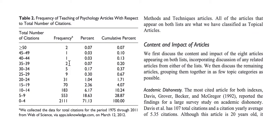Now, what happens if you're asked about a 'greater than' scenario? Say you're asked what percentage of papers have no less than 30 citations — meaning 30 or more. You start from the 30-to-34 interval and add all the way up, which gives us 11. So that's how you handle 'no less than 30' — it should be at least 30.